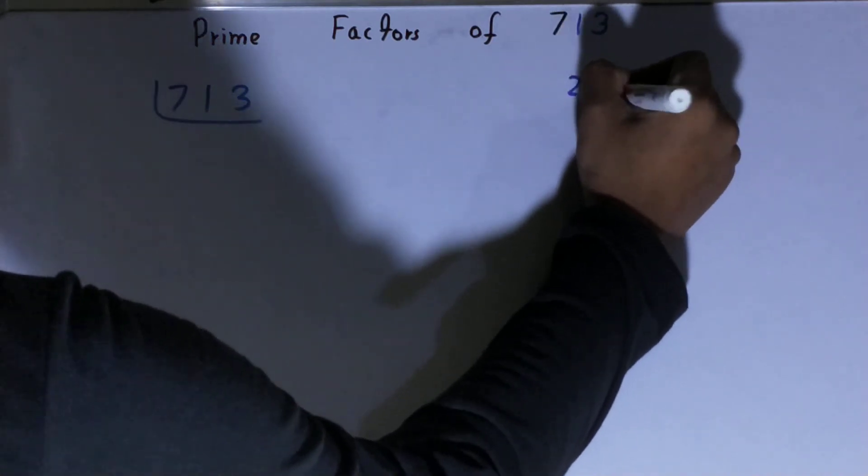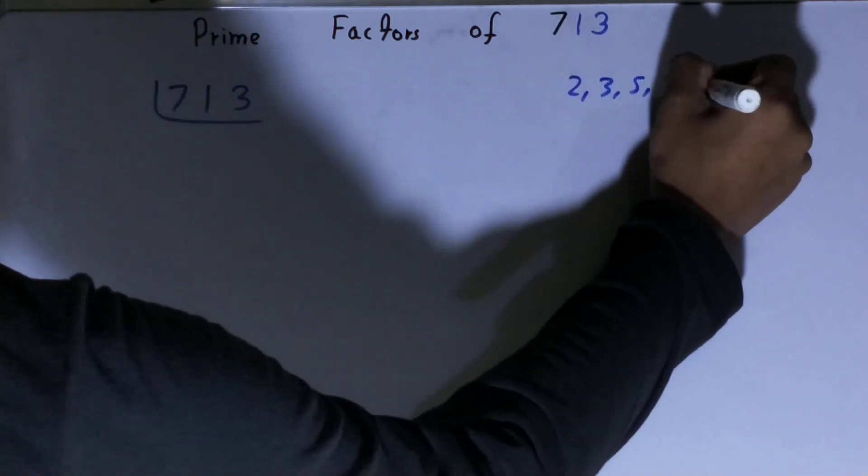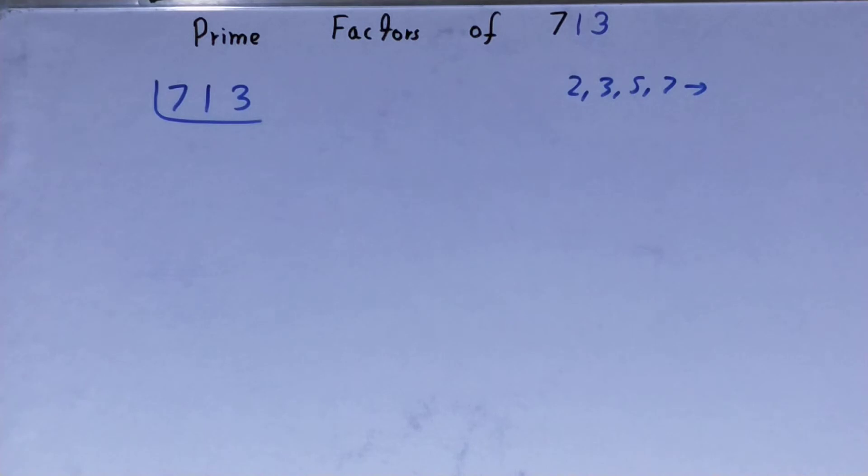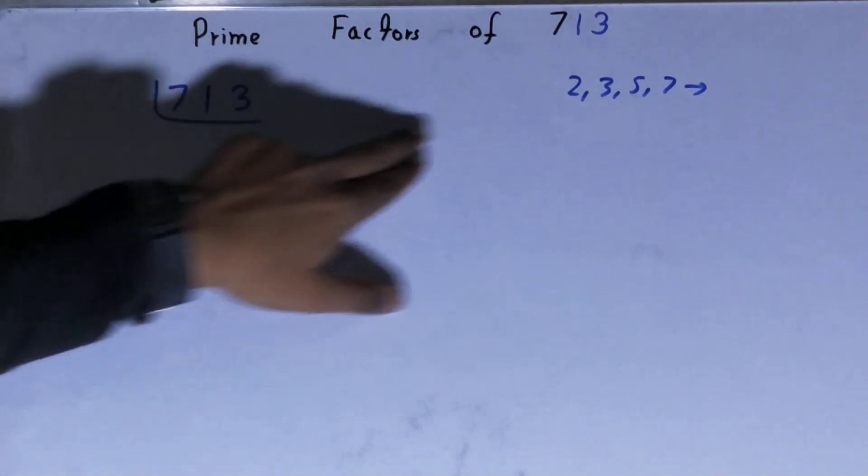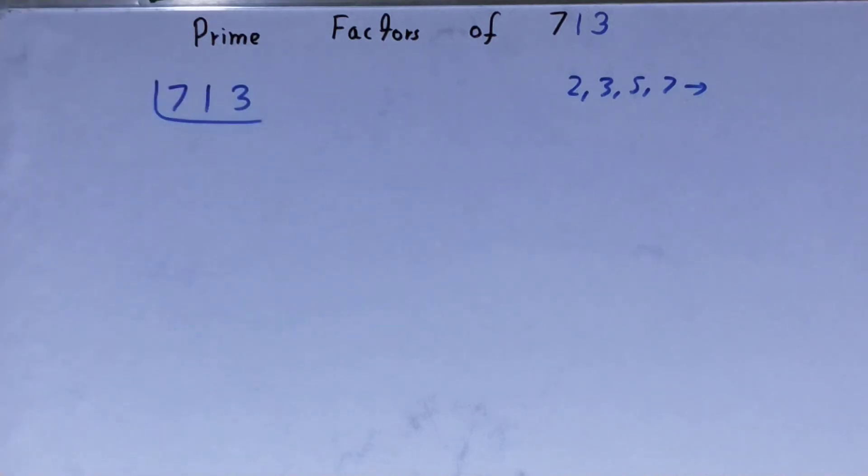Like 2, 3, 5, 7 and so on. We'll be starting with the lowest prime number we have, that is 2. Is the number 713 divisible by 2? Clearly not, it is an odd number.